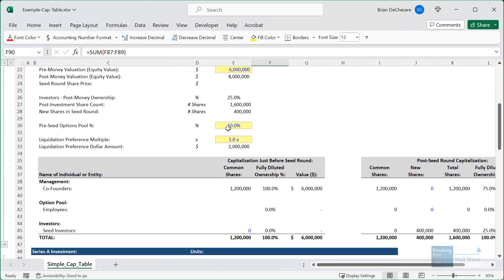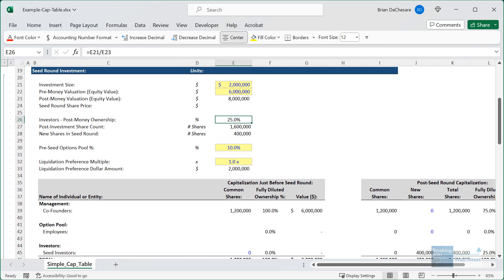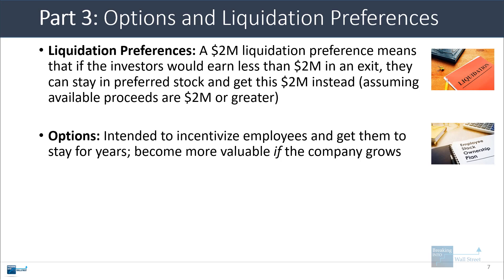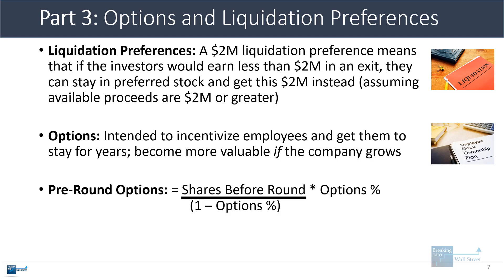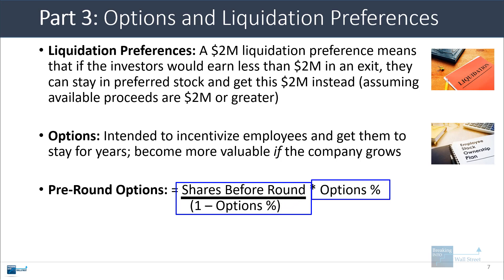You want to track liquidation preferences over time and have them set up in your table for each funding round. Options are granted to employees to incentivize them to stay at the company, because if they stay they can get options with very low exercise prices that become worth a lot more if the company grows. They can pay to exercise their options, get shares, and sell them for a large profit. To calculate the number of shares, if options are created before a funding round, you take the shares that existed before the round, divide by 1 minus the options pool percentage to gross up the total, and then multiply by the options pool percentage.